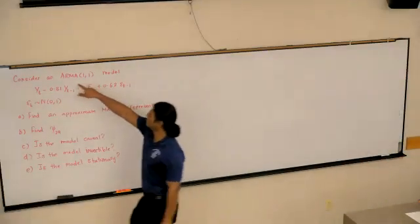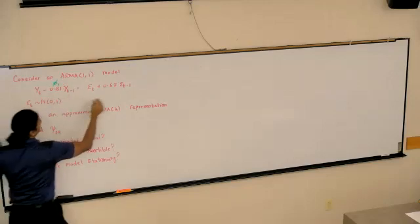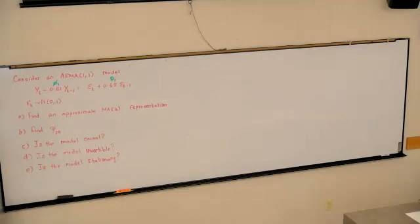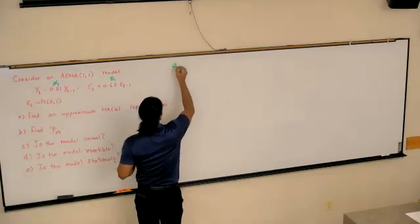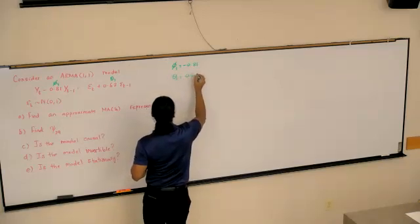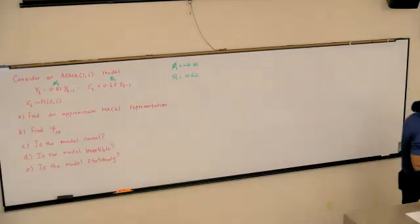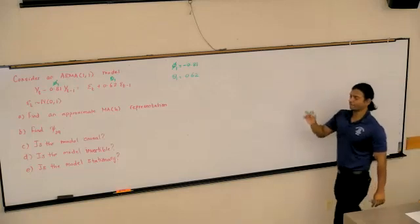So, we have another ARMA(1,1) model, where phi1 equals negative 0.81 and beta1 equals 0.62. When we first derived everything, we used plus phi1, so phi1 in this case would be minus 0.81, and beta1 would be 0.62. Our goal is to find the approximate MA(4) representation.